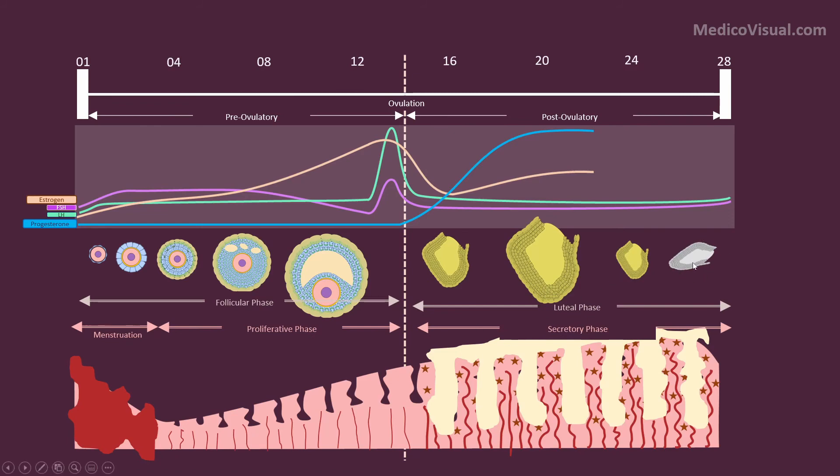This corpus luteum is turned into a white scar structure called corpus albicans. As corpus luteum has degenerated, the levels of progesterone and estrogen will fall, and there will be a slight increase in the levels of FSH and LH to begin the new cycle.